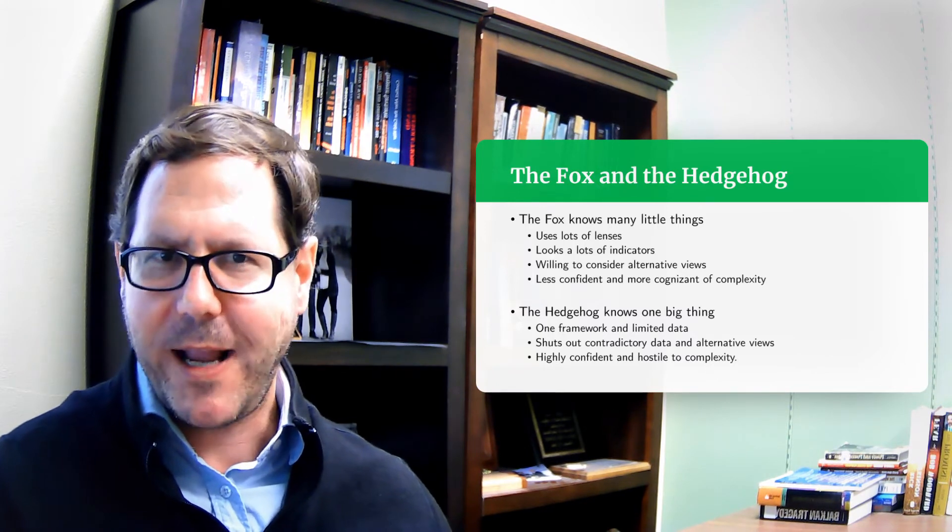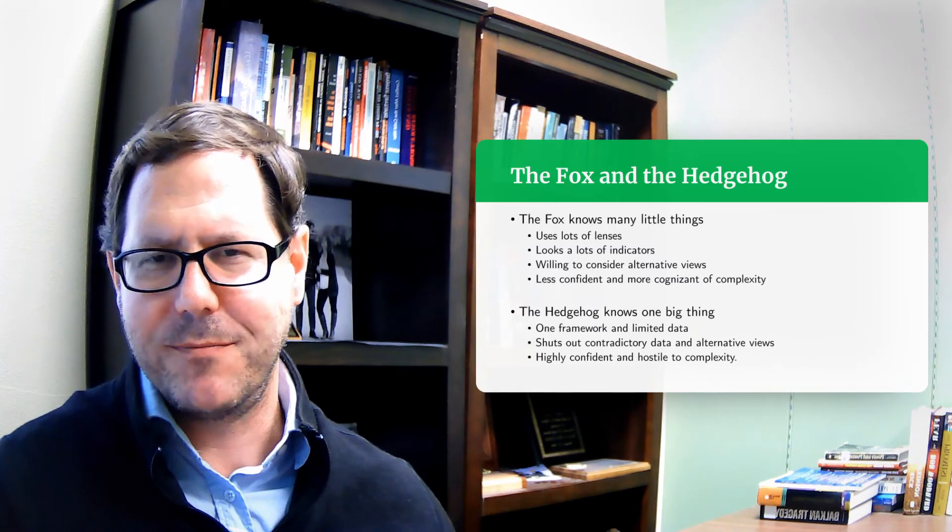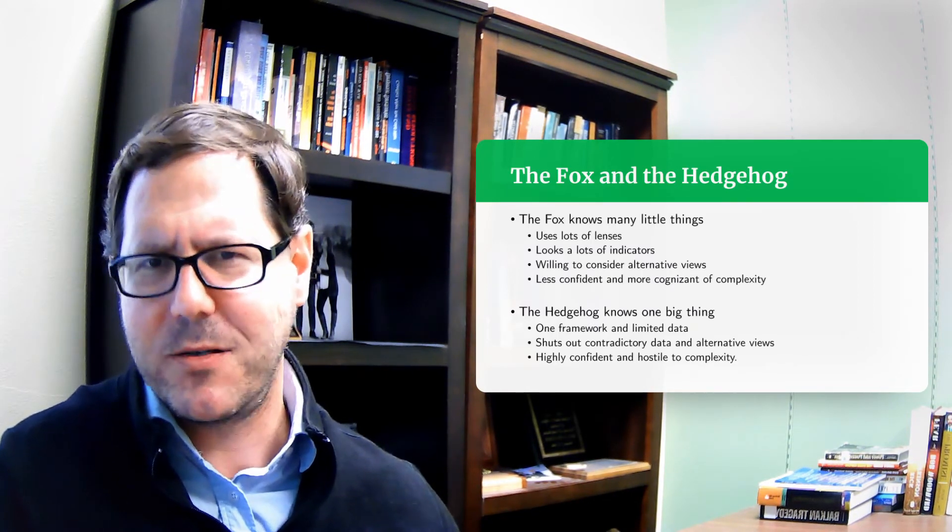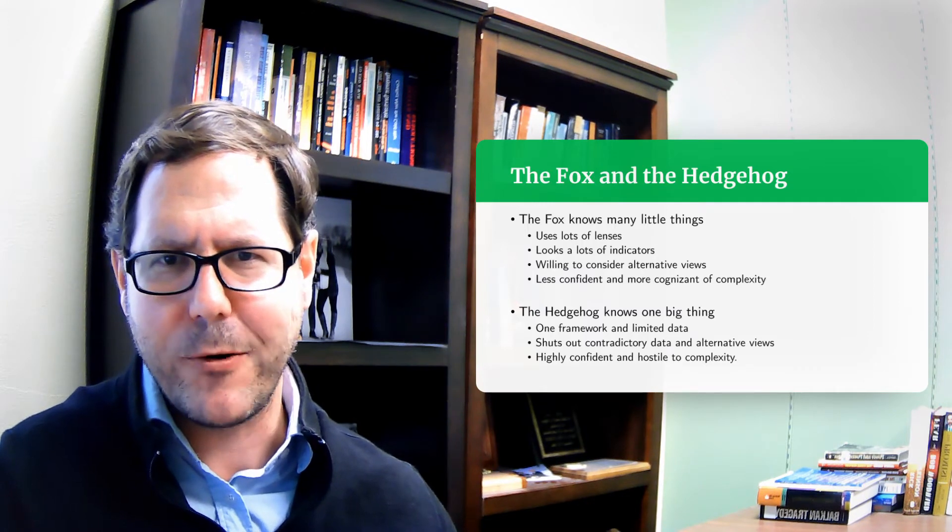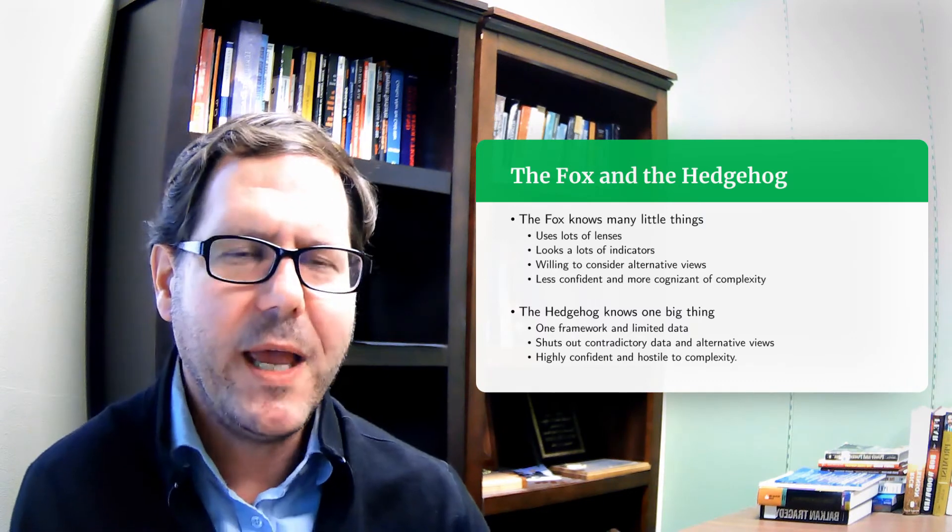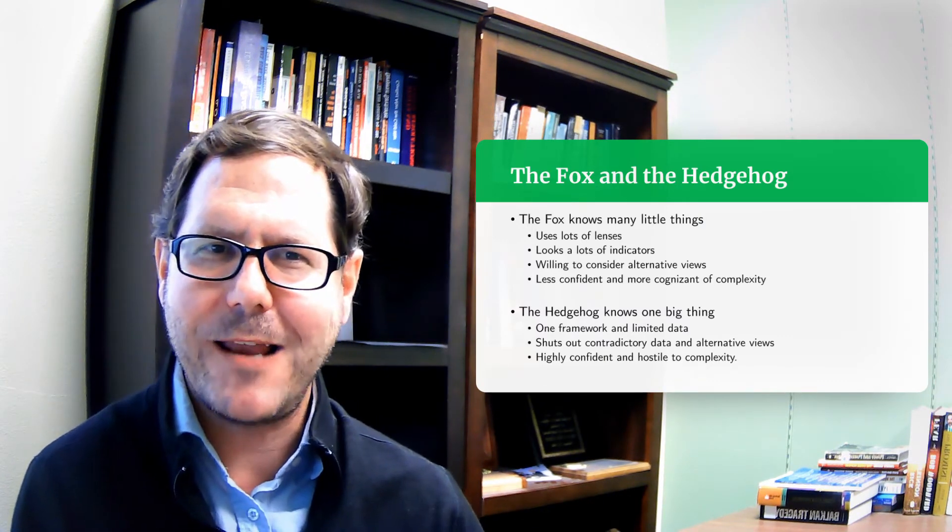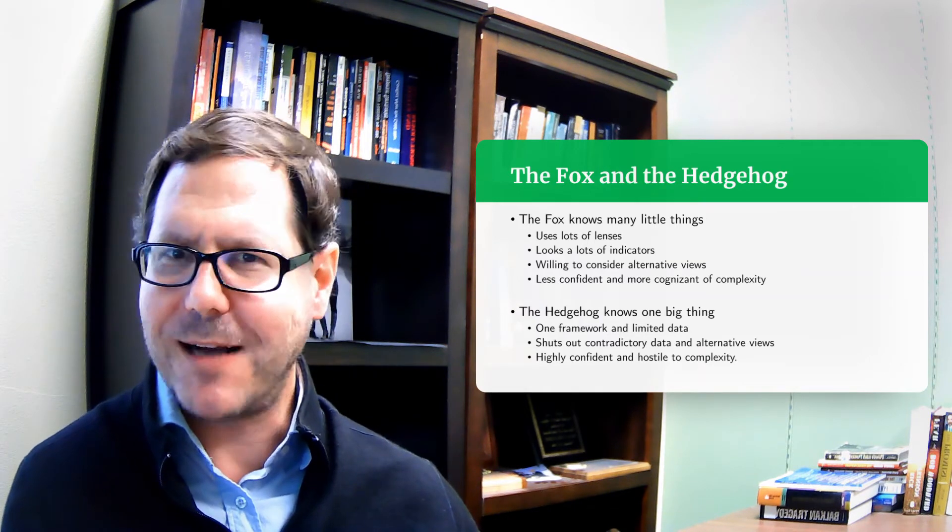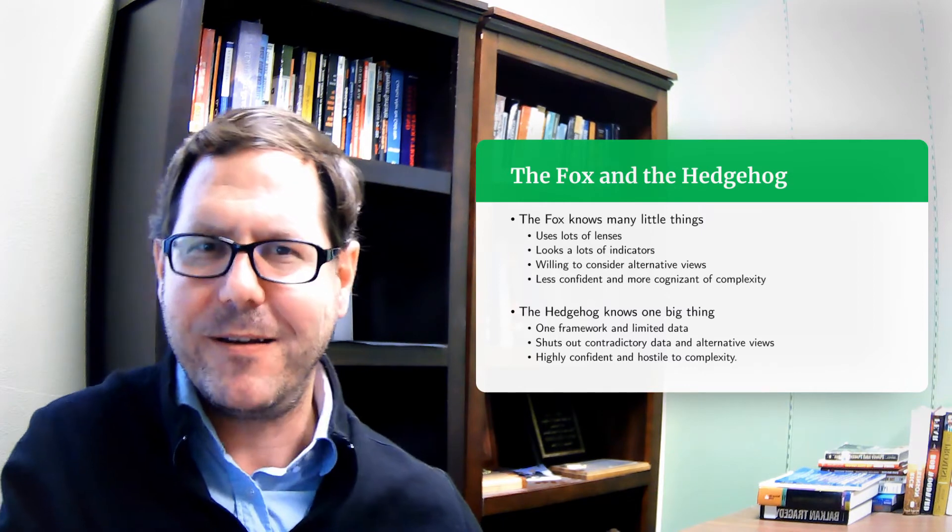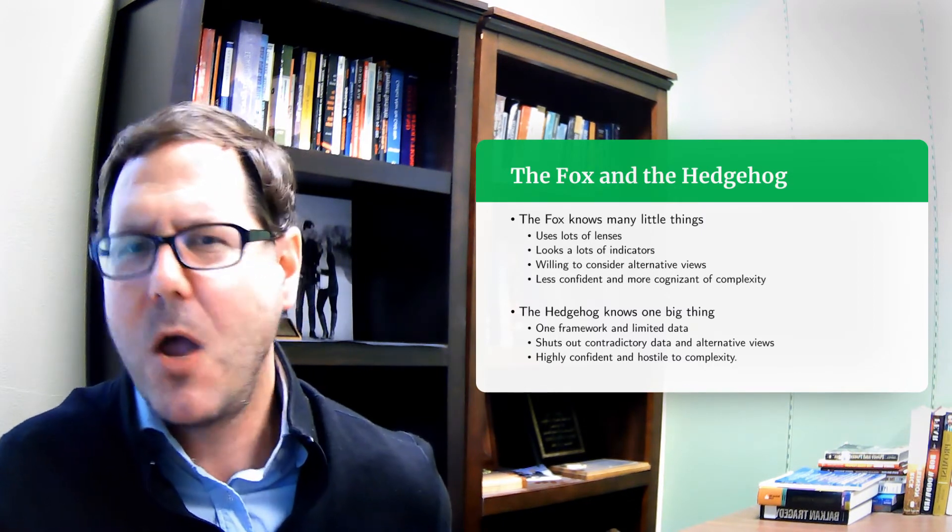There's a story or a fable associated with this but the basic story is hedgehogs know one thing. Every problem they encounter they curl up in a ball, they get spiny and they become a hedgehog. That's how they deal with the world. Foxes however are classically clever and know lots of tricks. So foxes when they encounter a problem will try different things and tackle it in different ways.